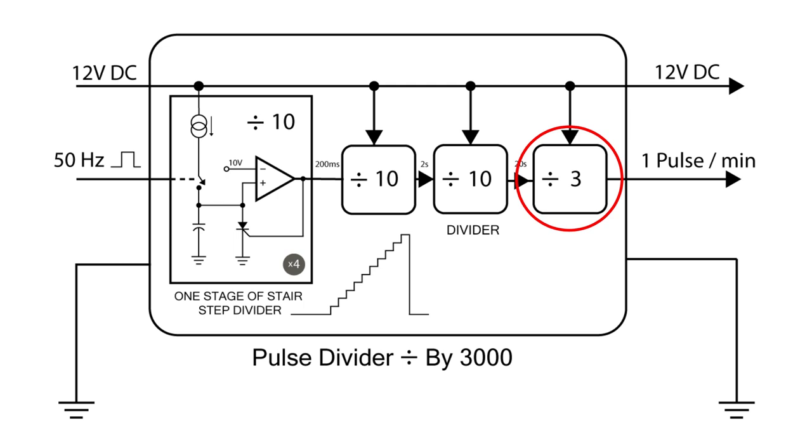That one is the smallest division ratio because it has the longest time period. The input to that one is a pulse every 20 seconds. So since it divides only by 3, the leakage has the least effect on that counter. These counters can be just calibrated with a potentiometer to divide by a specific number. And over a fairly wide range of frequency, it works well and it's very stable.